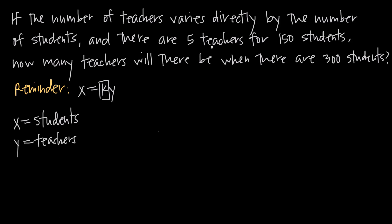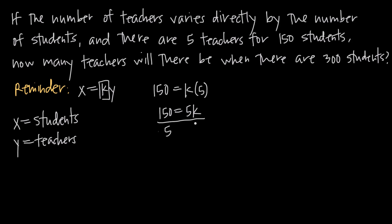There are five teachers for 150 students, so we plug in 150 for x and 5 for y: 150 = k × 5. That gives us 150 = 5k. Dividing both sides by 5, the 5s cancel and we get 150 ÷ 5 = 30, so k = 30.